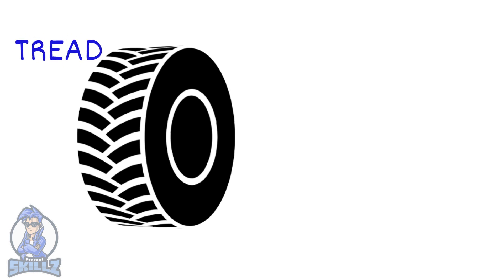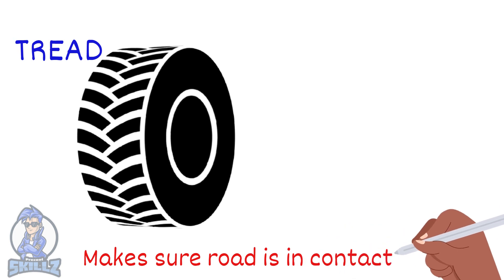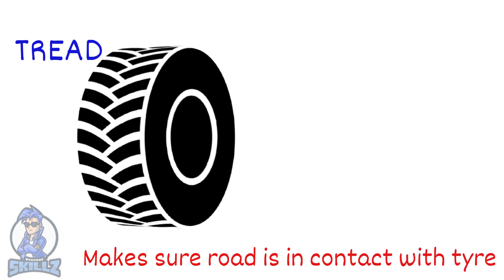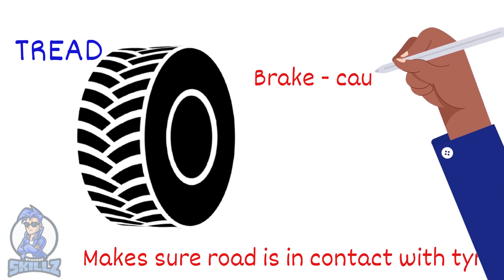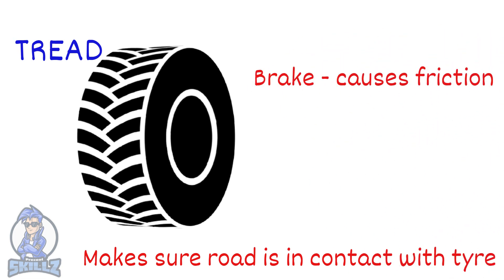The grooved pattern on the car's tire is known as the tread of the tire. What the tread does is it makes sure the road is always in contact with the tire by throwing away water and other substances that prevent contact. Brakes work by increasing friction between the tire and the road.